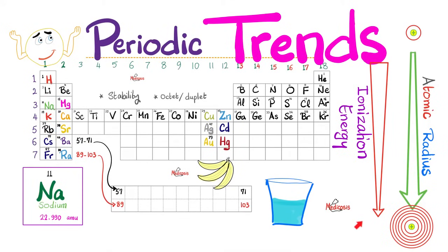Hello, it's Medicosis Perfectionitis, where medicine makes perfect sense. Let's continue our general chemistry quick review playlist, a playlist for busy people where we get straight to the point. The last video was about the periodic table. Today we'll talk about the periodic trends — the patterns of change in the periodic table — namely the atomic radius, ionization energy, electron affinity, electronegativity, and even metallic character.